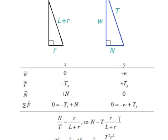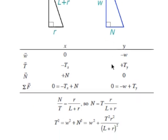From our similar triangles, we know that the ratio n over t equals R over (L plus R), so we can solve for n: n equals t times R over (L plus R). We also know from the force triangle being a right triangle that t² equals w² plus n². Substituting our expression for n, we get t² equals w² plus t²R²/(L plus R)². This gives us an expression for t in terms of R, (L plus R), and W — all of which are known — so we can solve for t and then find n.